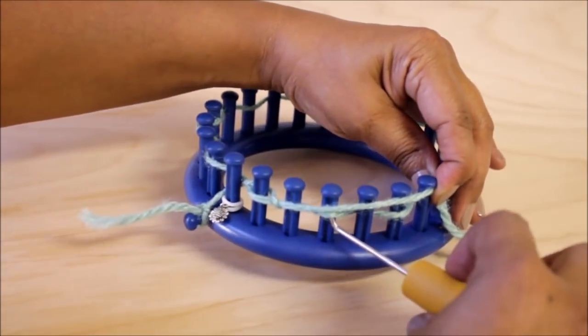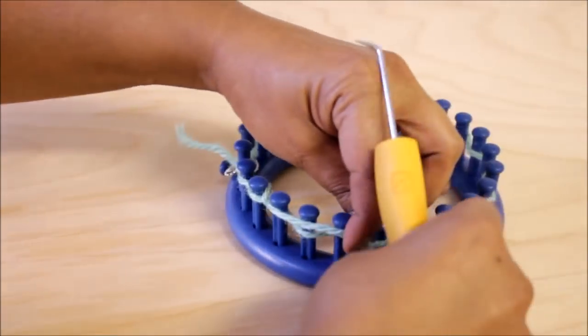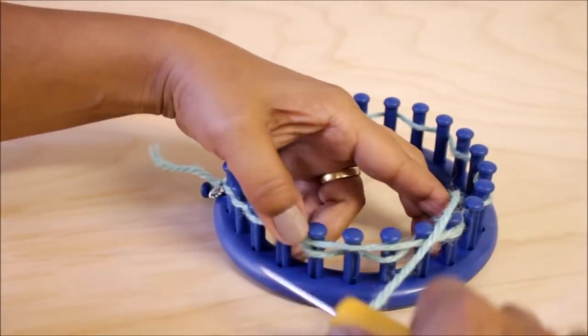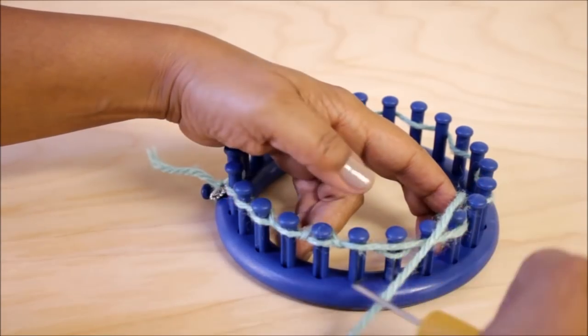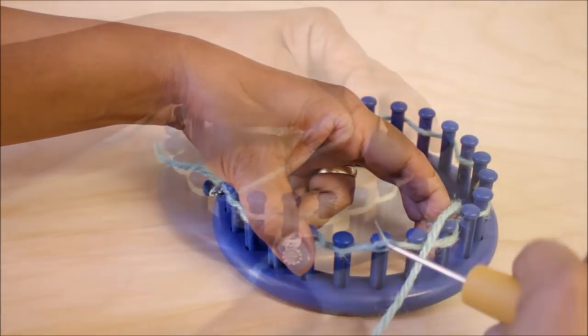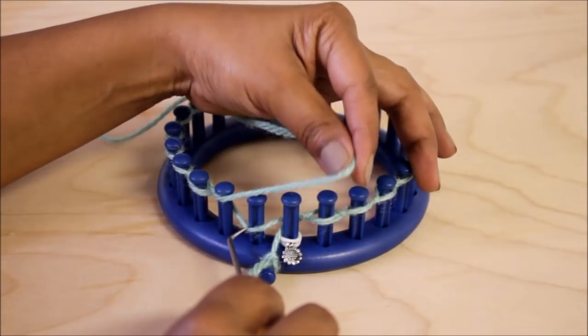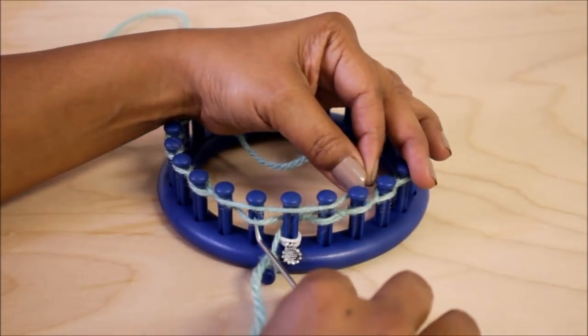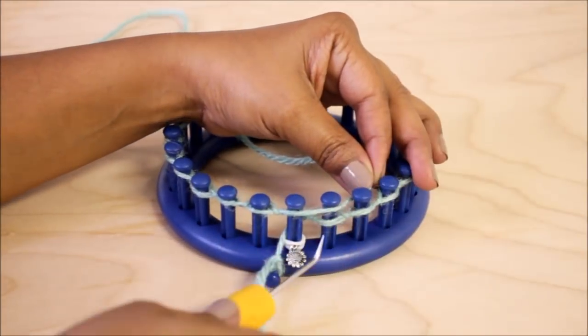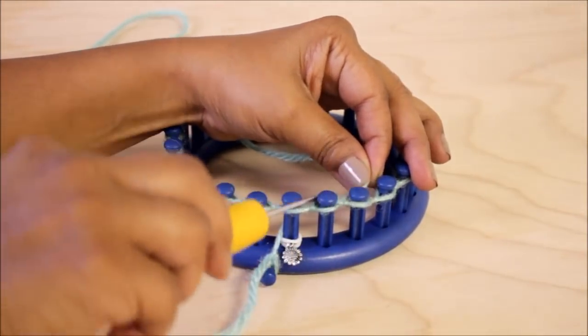You're gonna knit off every peg that has two loops. Continue to knit off your pegs with two loops till you get back to the front. Remember you skipped that one. You're gonna lay your yarn over it and then go to the next peg.